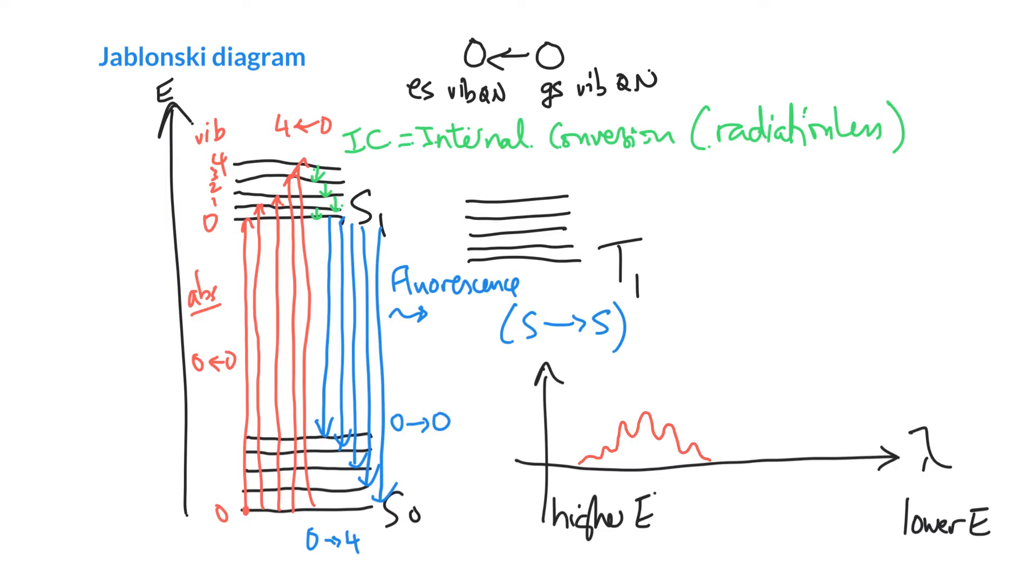And so this one here corresponds to 0, 0. And then this one here would be 1, 0, I suppose. And this one here would be 2, 0, and 3, 0, and 4, 0, and so on. So this is my absorption spectrum here.